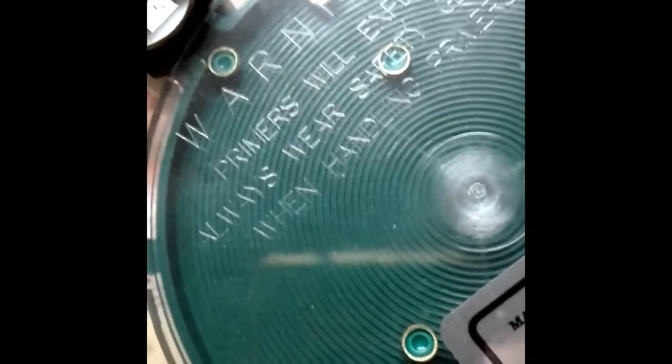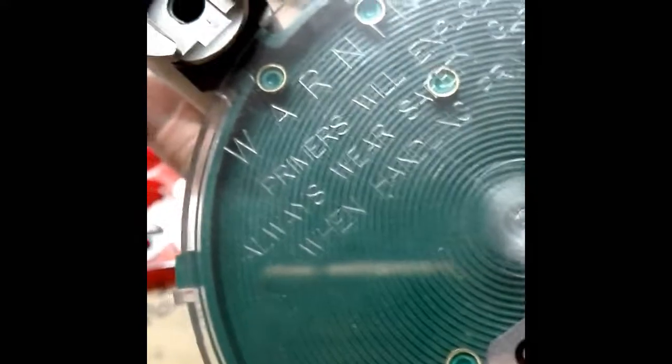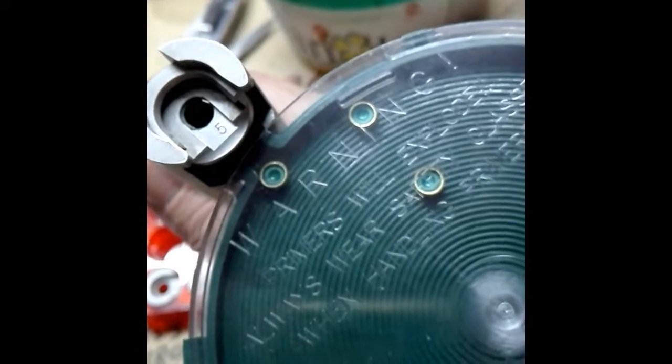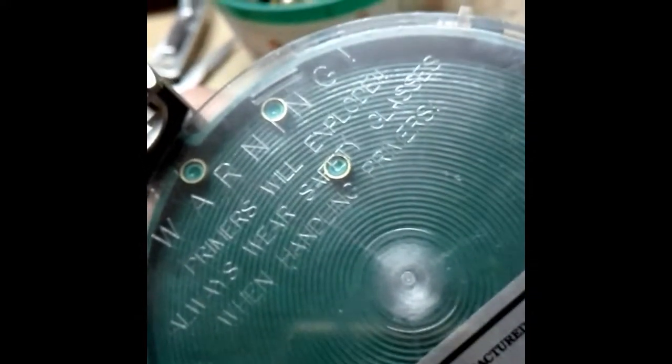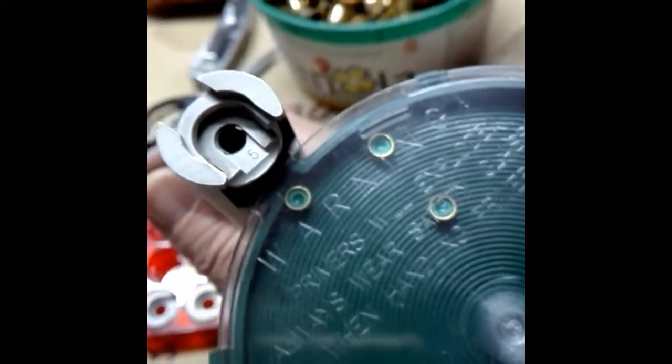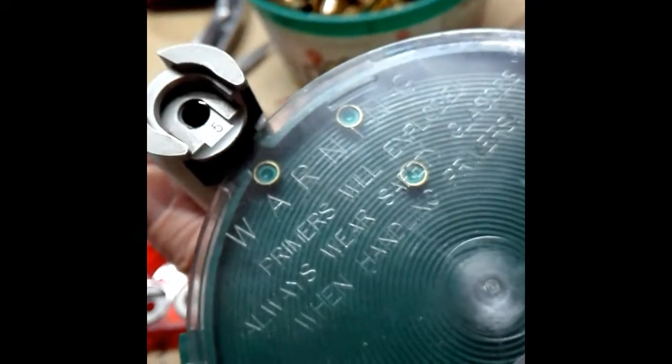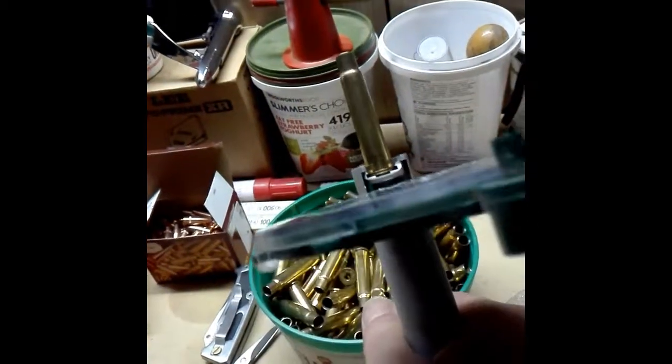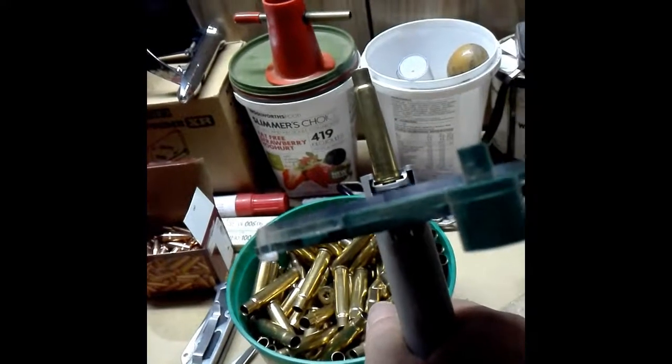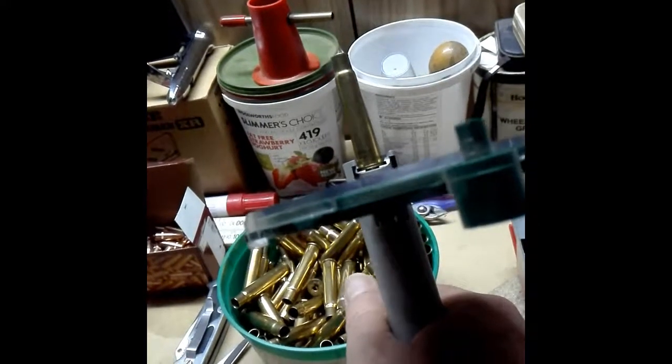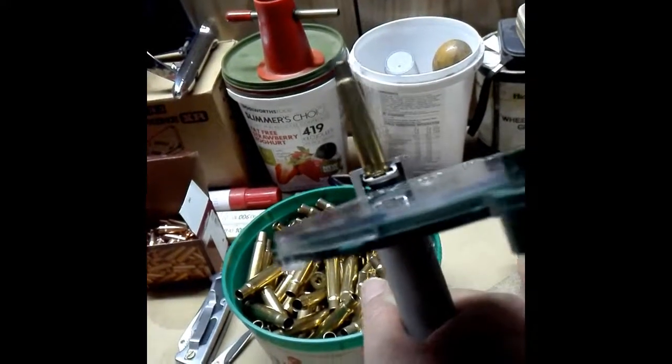When priming the Berdan cases, you basically use the normal priming tool. You will see a Berdan primer is a little bit bigger than the normal Boxer primer, but it does fit. This is a Hornady hand priming tool that I'm using. It works just like you would normally prime a Boxer primer. Let's do one quickly. You insert it as normal, hold it 45 degrees away from your face, be sure to have your safety goggles on when doing this, and you basically press down on it and it seats.